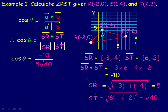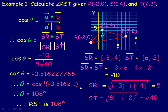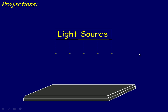Substituting all values in, cos θ = −10 / (5 · √40). Dividing −10 by 5√40 gives approximately −0.316. Taking the inverse cosine of that value gives the angle of about 108 degrees. That looks reasonable — it does appear to be a little more than a right angle. So angle RST is 108 degrees.